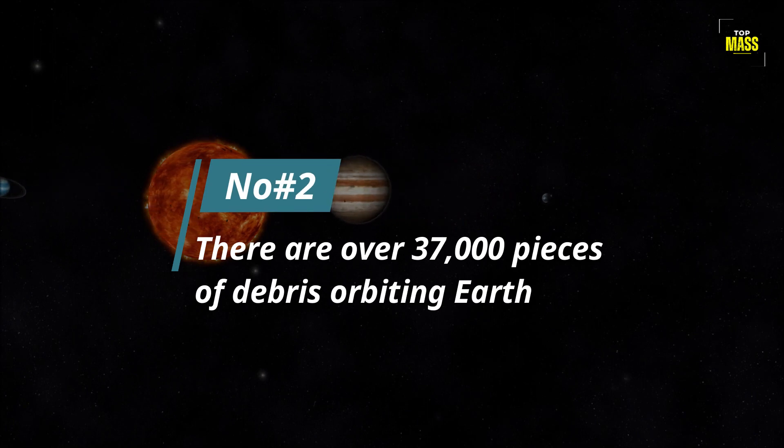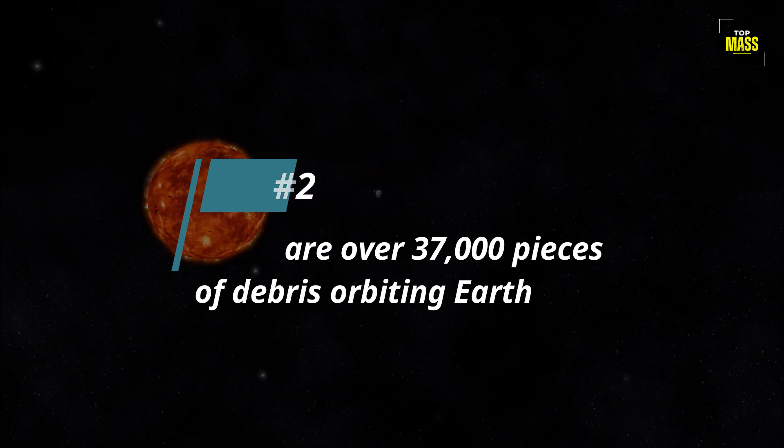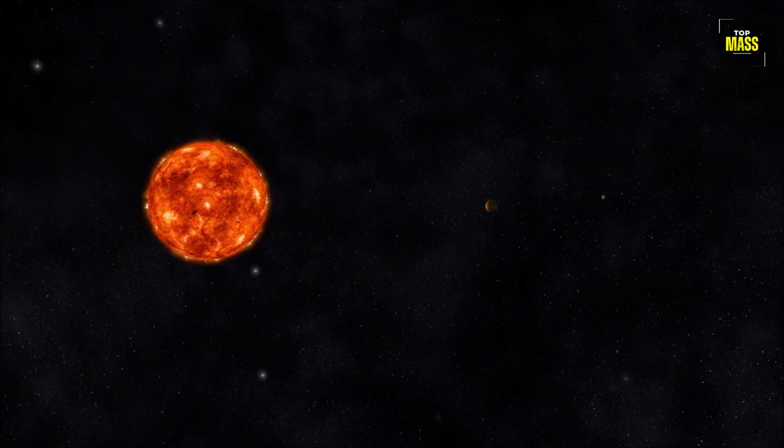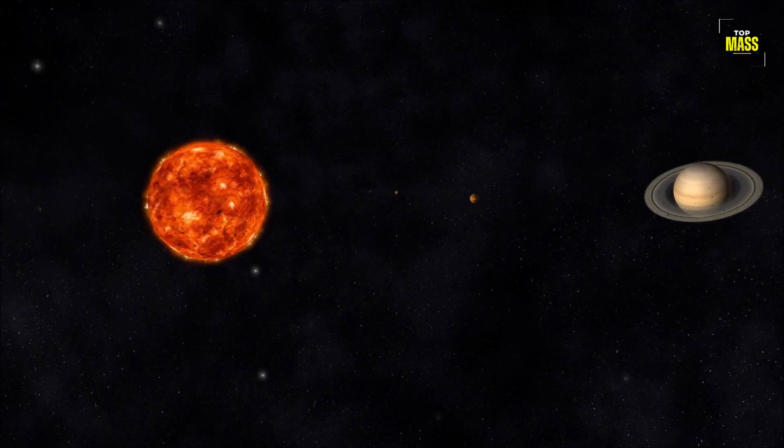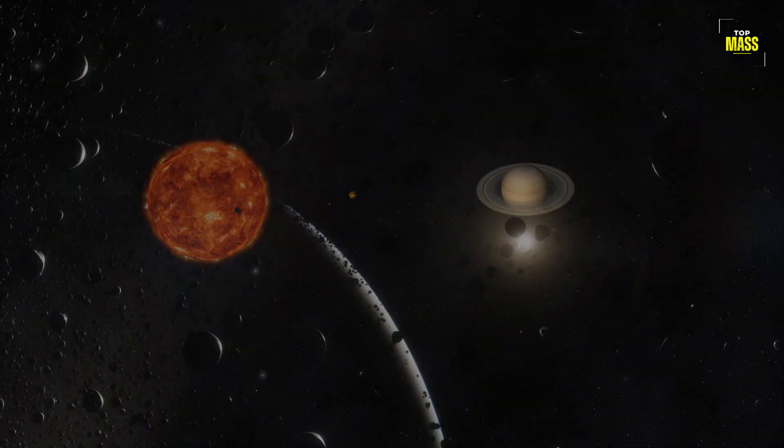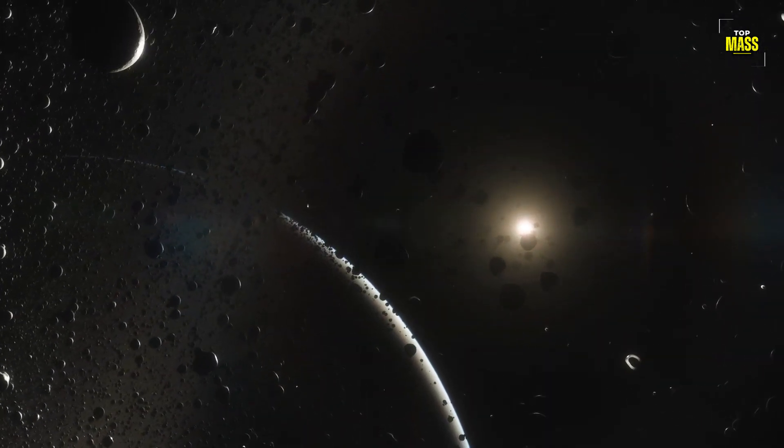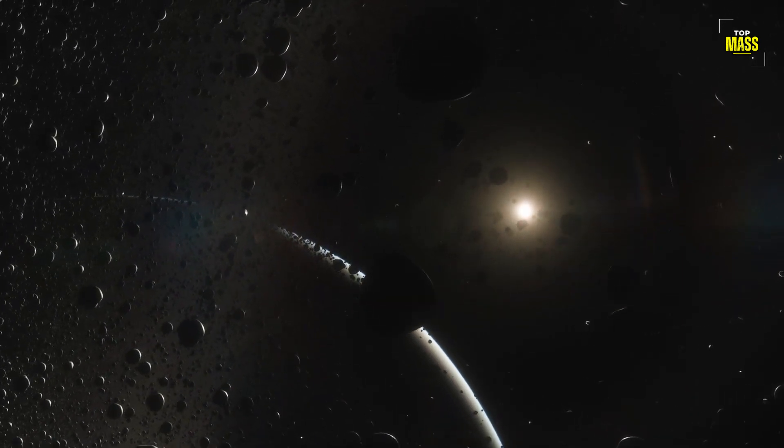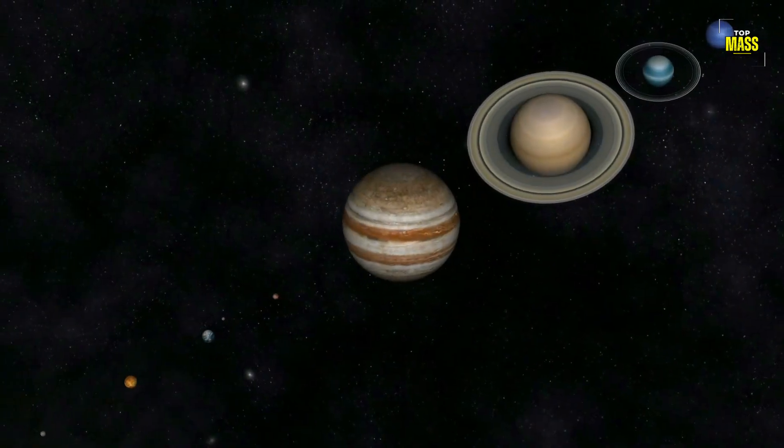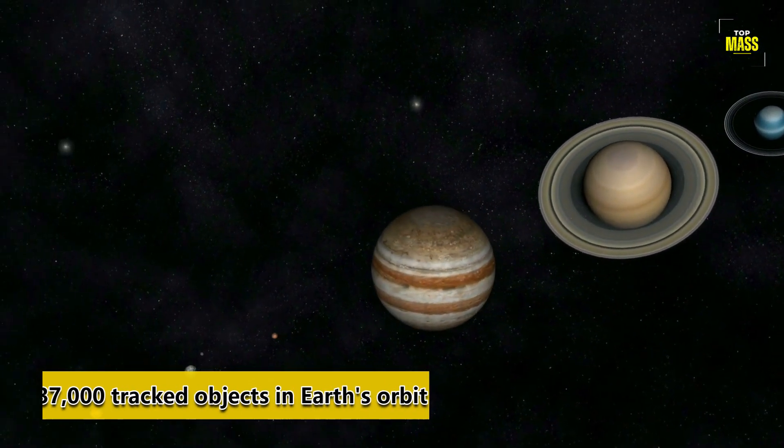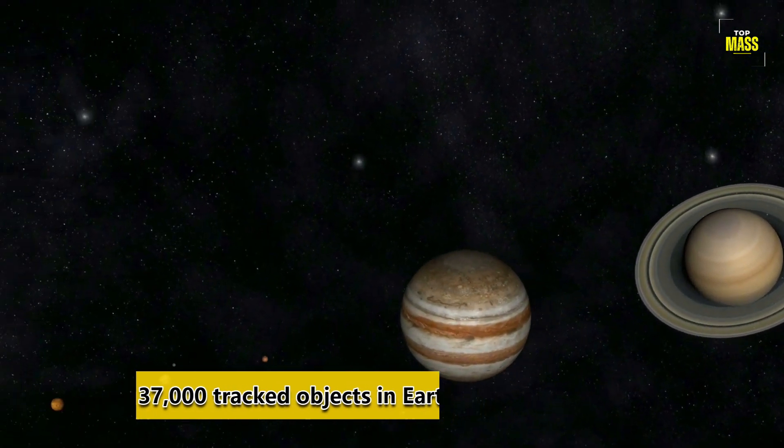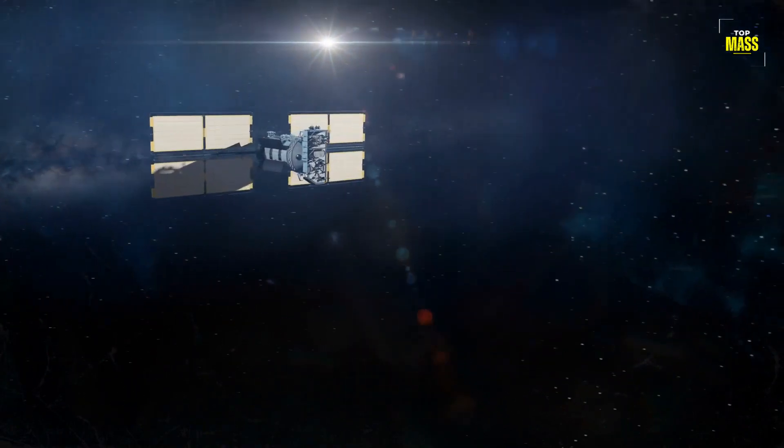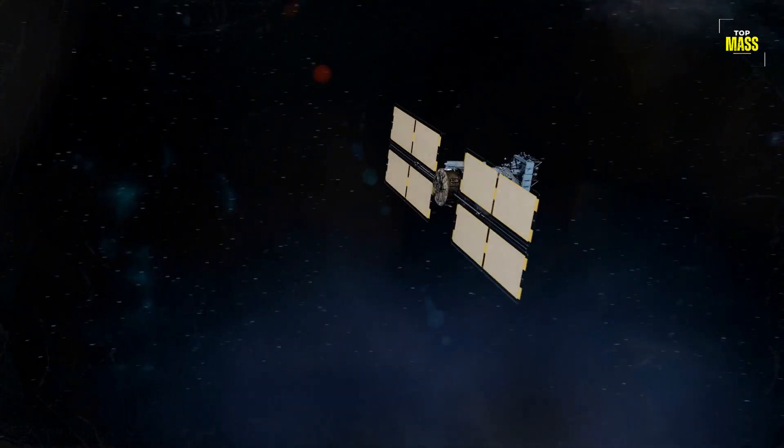Number 2. There Are Over 37,000 Pieces of Debris Orbiting Earth. As we gaze up at the night sky, it's easy to take for granted the vast expanse of space that surrounds us. However, what most people don't realize is that our planet is surrounded by thousands of pieces of debris orbiting at high speeds. In fact, there are currently over 37,000 tracked objects in Earth's orbit. These range from defunct satellites and spent rocket stages to tiny fragments left over from previous missions.